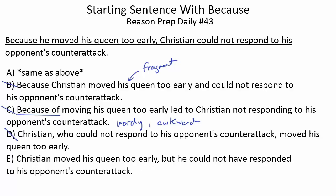How about E? Choice E reads: 'Christian moved his queen too early, but he could not have responded to his opponent's counter-attack.' A couple of things are wrong here. The grammar is more or less okay, but the logic doesn't work. The word 'but' shows a contrast, whereas what we need is a cause-and-effect link between the two things, not a contrast that excludes one from the other. Additionally, the tense has been changed to present perfect — 'could not have responded' — and there's no reason to do that. It makes the cause-and-effect link even more awkward and vague. So we can get rid of E.